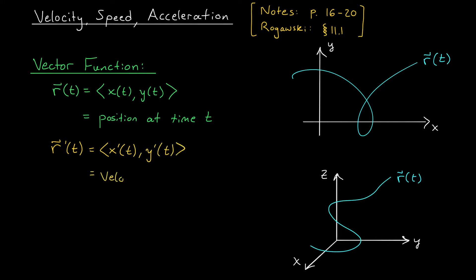So let's write this down. r prime of t, the derivative, is equal to the bug's velocity at time t. Now, velocity is actually a vector. It has both a magnitude and a direction. If, instead, you just wanted to know the magnitude of the velocity, well, you're measuring the speed in that case. The speed is the length of the velocity vector. It's the norm of r prime of t.